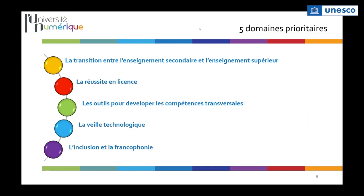Nos actions s'articulent autour de plusieurs domaines prioritaires: la transition entre l'enseignement secondaire et l'enseignement supérieur, la réussite en licence — les trois premières années étant un défi en termes de limitation de l'échec — le développement des compétences transversales, et nous nous appuyons sur une veille technologique pour utiliser les différentes technologies émergentes. Nous mettons en œuvre l'ensemble de nos ressources pour améliorer l'inclusion numérique en France et aussi dans les différents pays membres de la Francophonie.